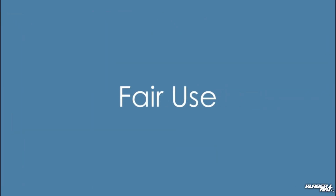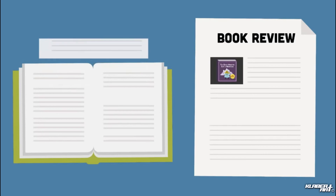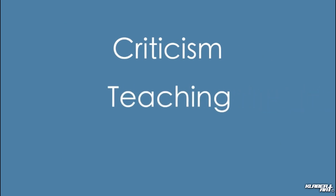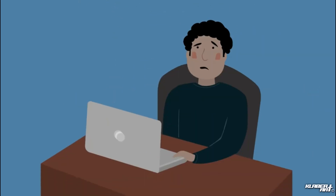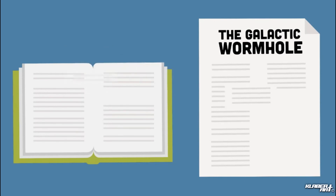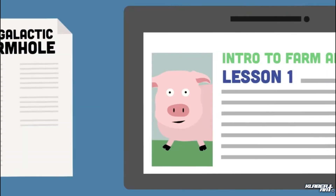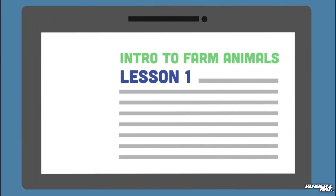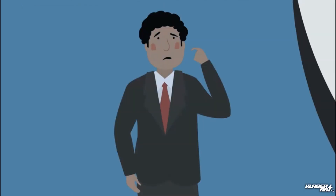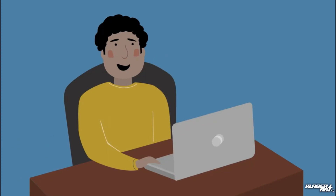Although you normally need permission to use copyrighted material in your own work, there is an exception called fair use. Fair use allows you to use brief portions of copyrighted works without permission for certain types of use such as criticism, teaching, or news reporting. However, fair use can get tricky — for instance, you may not be able to claim fair use if you use the copyrighted work for a commercial purpose or take too much of it. When in doubt, always respect the creator's copyright and use as much of your own material as possible. You should now have a better understanding of the basics.